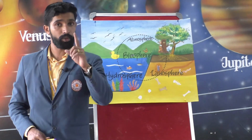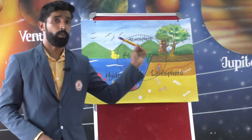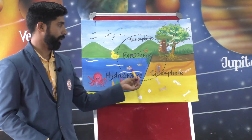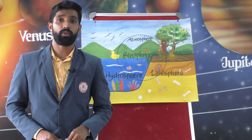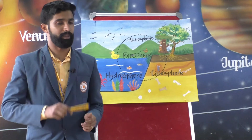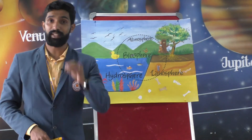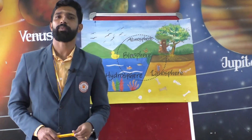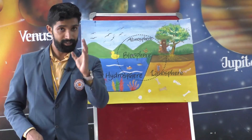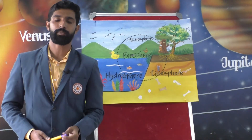All living organisms are interdependent and in turn depend on the biosphere for survival. Humans are an important element of the biosphere. The living organisms found in the biosphere vary from place to place — water, land and air. The type of plants and animals found in a region depends on its climate. The biosphere is made up of distinct zones, each with its own climate, plant and animal life. These zones are called ecosystems.